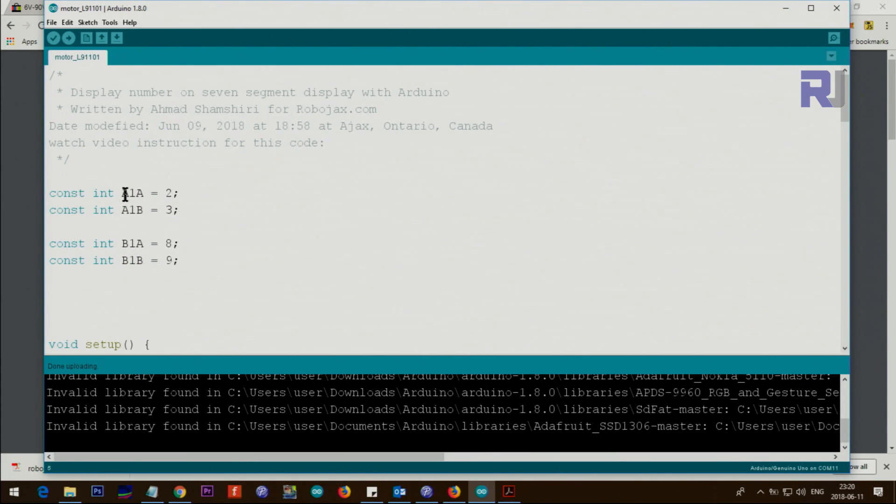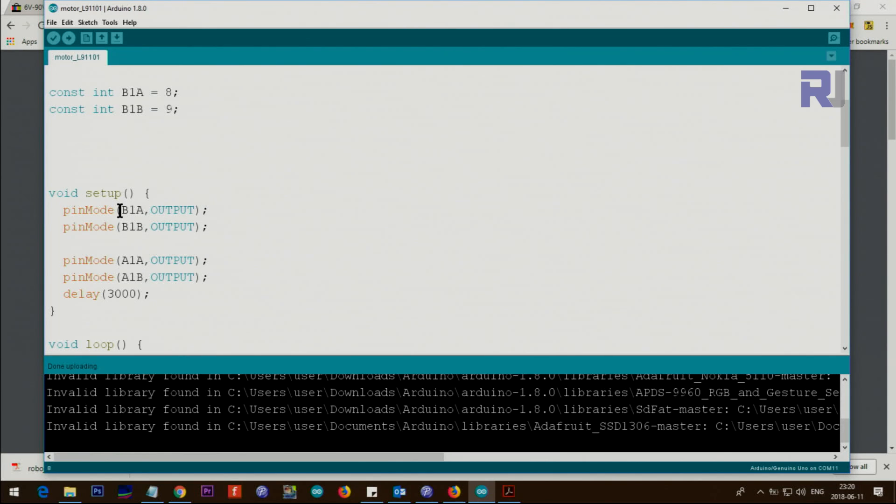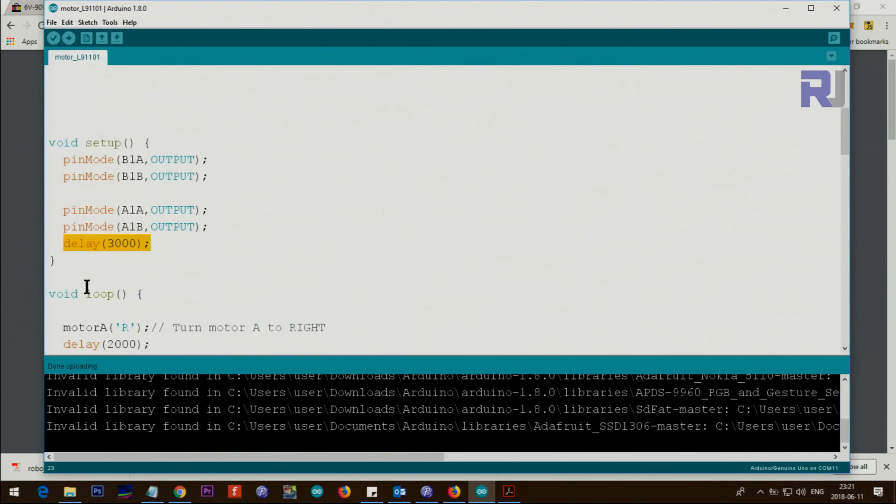Let me explain the code. That's A1A, that's pin 2. A1B, that's pin 3. So these two are used for controlling motor A. That's for motor B, 1A and 1B are defined as 8 and 9. Because these are constants, they cannot be changed. Here we set up B1A and B1B as outputs, and also A1A and A1B as outputs. These are needed, so this is for pin 2, 3, and this is for 8 and 9.